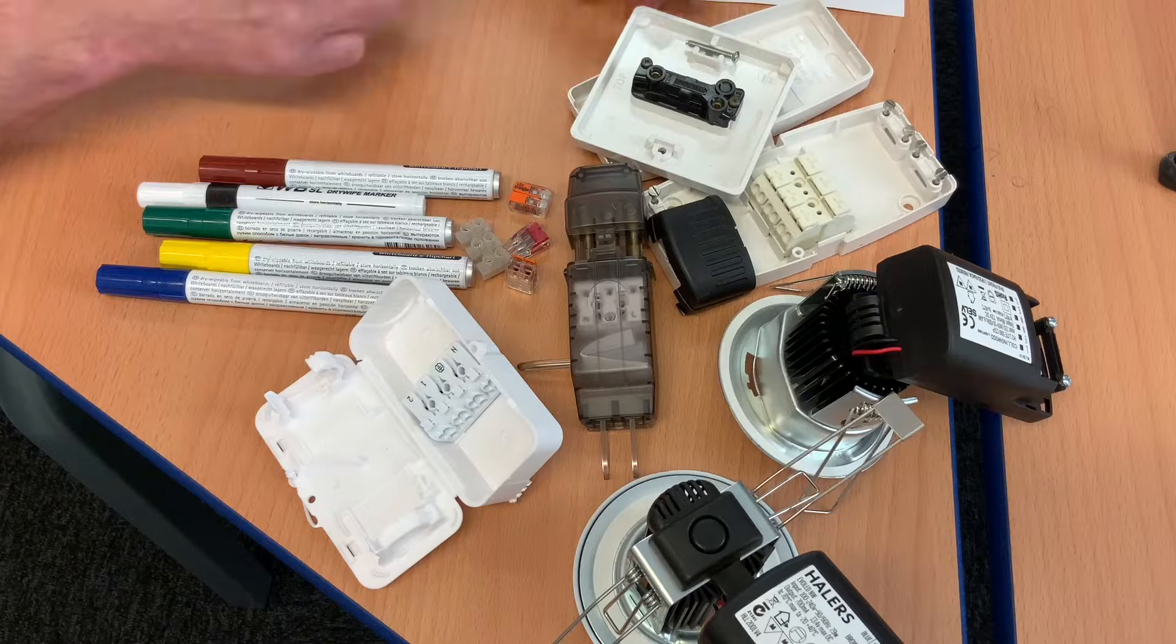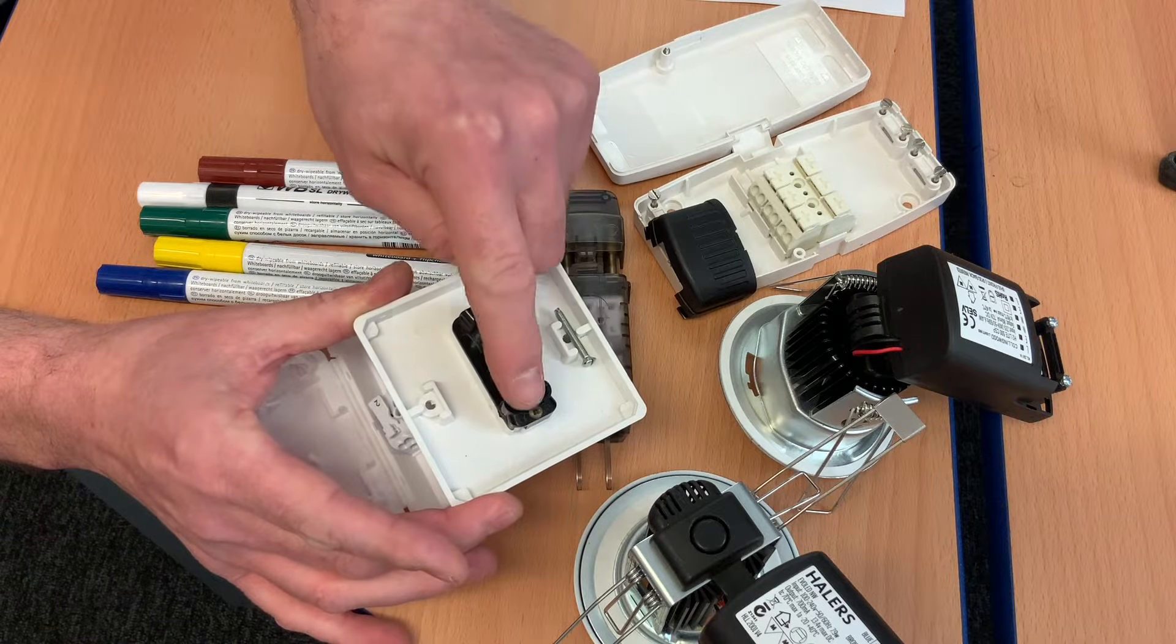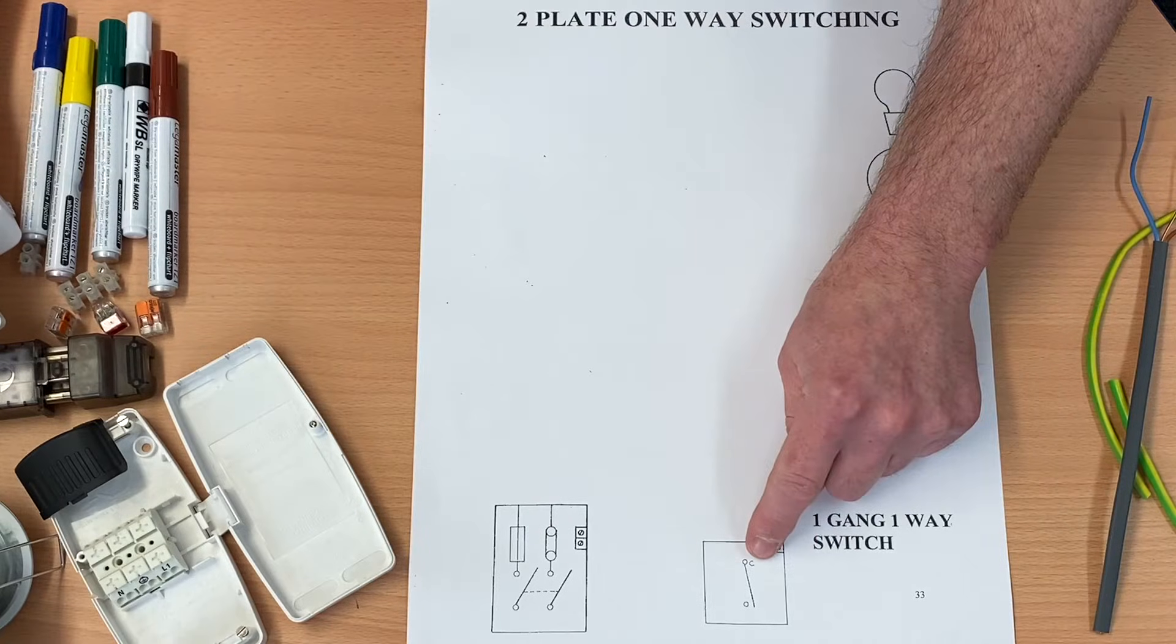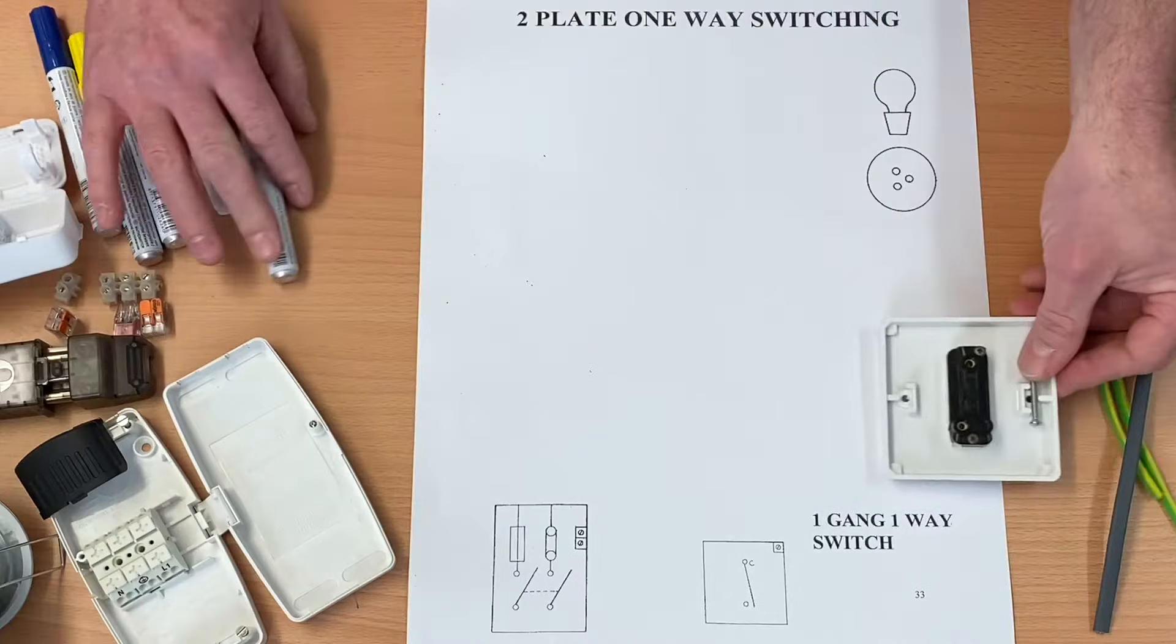However, this is a one-way switch. And with our one-way switch, we can clearly see we've got common and L1, exactly the same as what we've got here on our actual drawing itself. So common and L1 for our light switch.